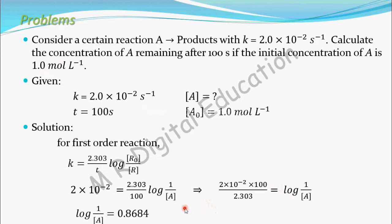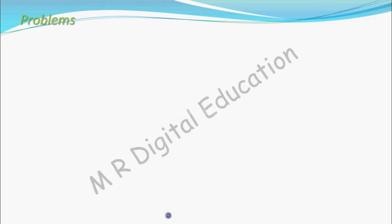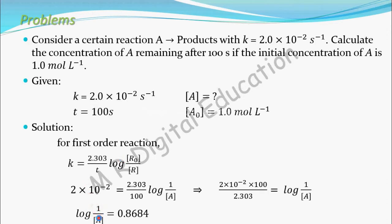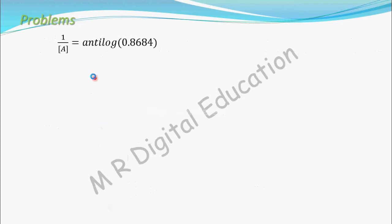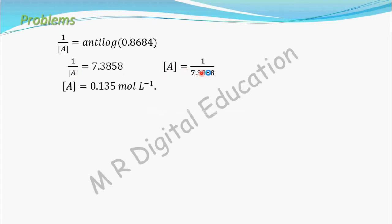Simplifying, log of 1 by A equals 0.8684. To extract A, take the antilog of both sides: 1 by concentration of A equals antilog of 0.8684, which is 7.3858. Therefore, concentration of A equals 1 divided by 7.3858, which gives 0.135 mole per liter. The concentration of A remaining is 0.135 mole per liter.